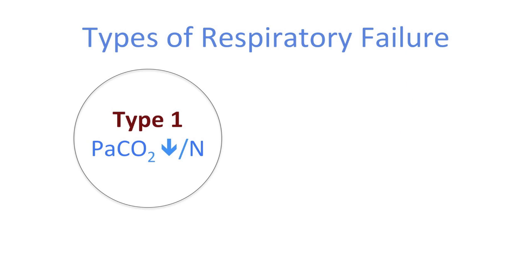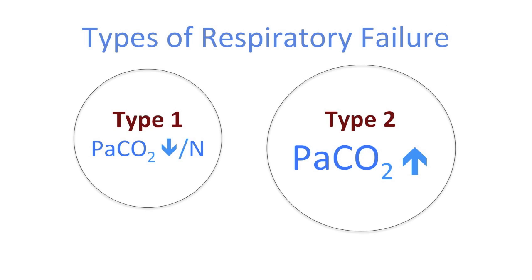Respiratory failure can be acute or chronic, or indeed acute on chronic. Importantly, respiratory failure can also be classed as type 1 or type 2. A type 1 respiratory failure is one where there is a low or normal CO2, and in a type 2 respiratory failure, the CO2 is raised.